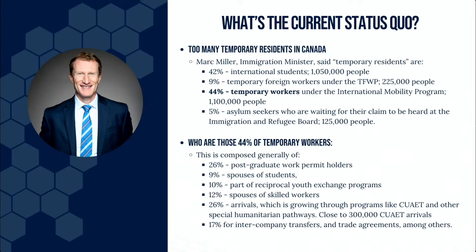Let's look at the numbers announced by the government. The political message was that there were too many temporary residents in Canada. Immigration Minister Mark Miller said temporary residents include international students, temporary foreign workers, international mobility program workers, and asylum seekers. Based on an assumption of 2.5 million temporary residents, 42% are international students, 9% are temporary foreign workers — around 225,000 people — and the largest group, 44%, are temporary workers, equaling about 1.1 million people. Asylum seekers account for 5%, representing 125,000.